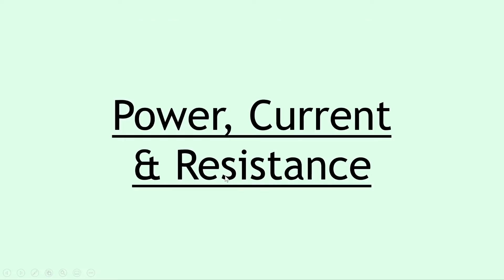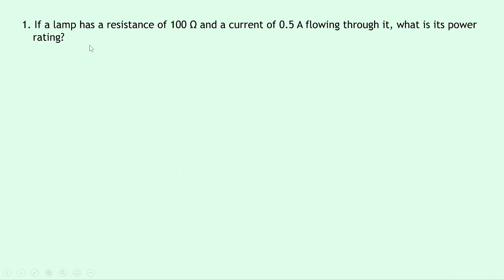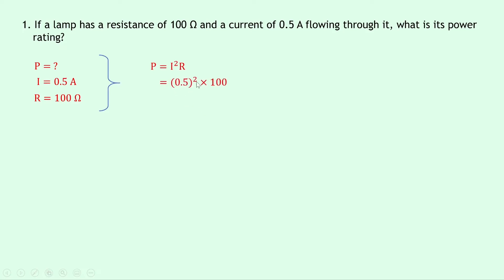We'll now look at the power relationship for power, current, and resistance, and we'll do three examples for this. Question one says that if a lamp has a resistance of 100 ohms and a current of 0.5 amps flowing through it, what is its power rating? Writing down what we know: we're trying to find power P, the current I is 0.5 amps, and the resistance R is 100 ohms. Our equation is P = I²R. Substituting in gives 0.5² × 100, which gives an answer of 25 watts.